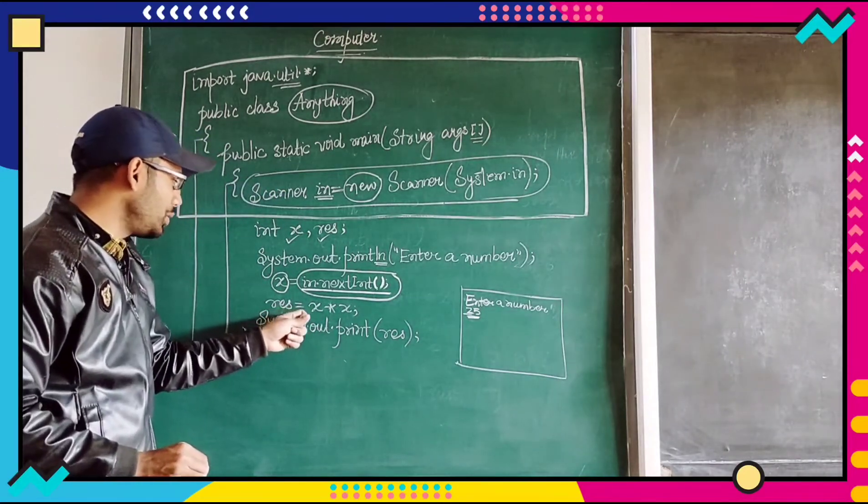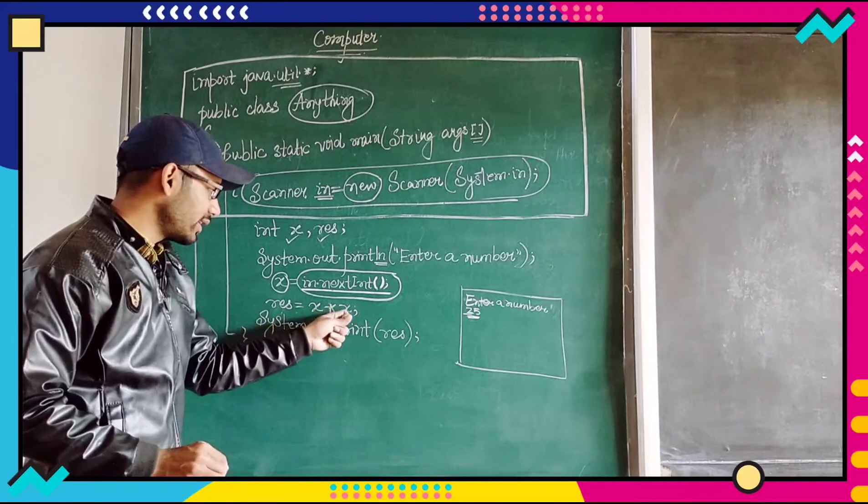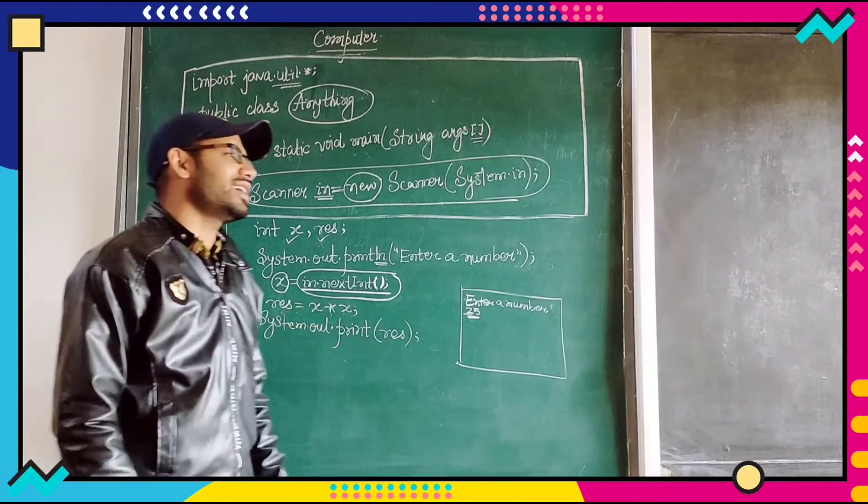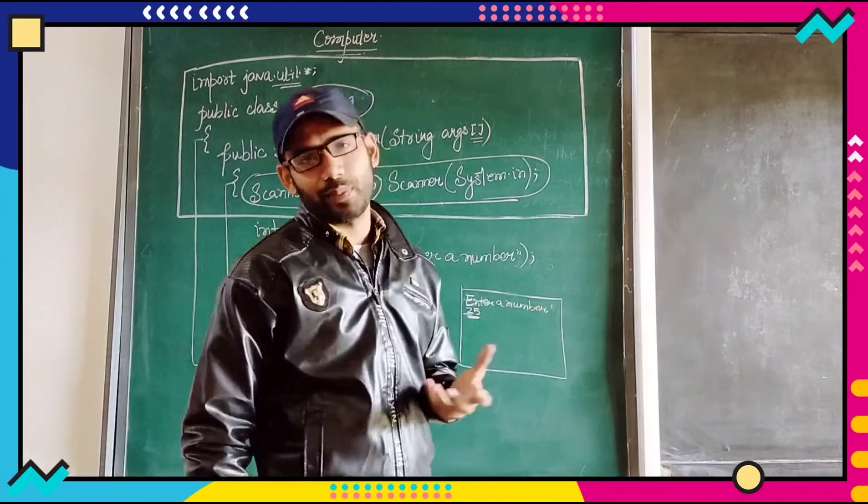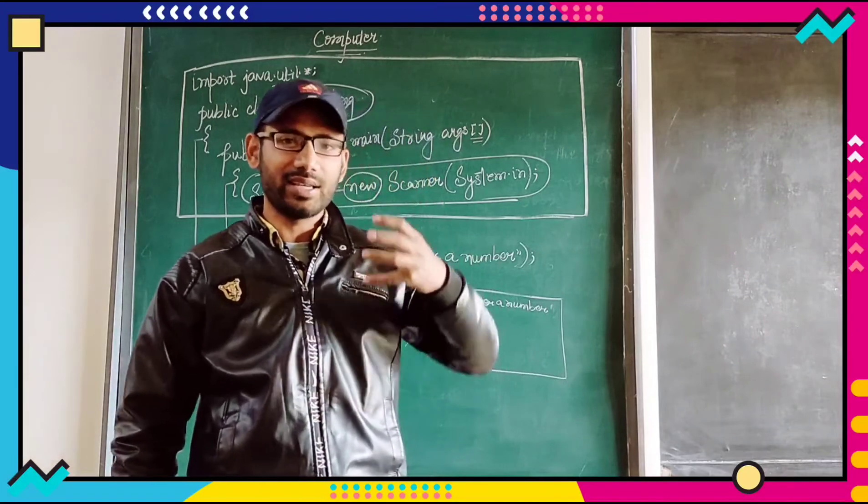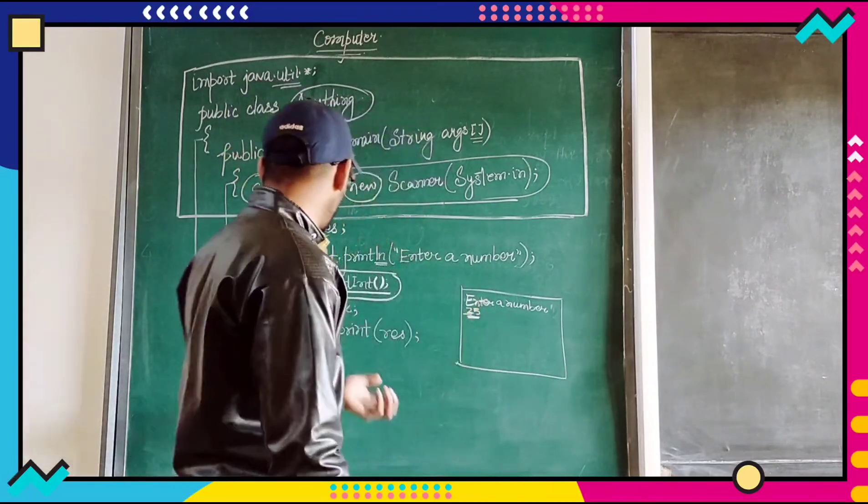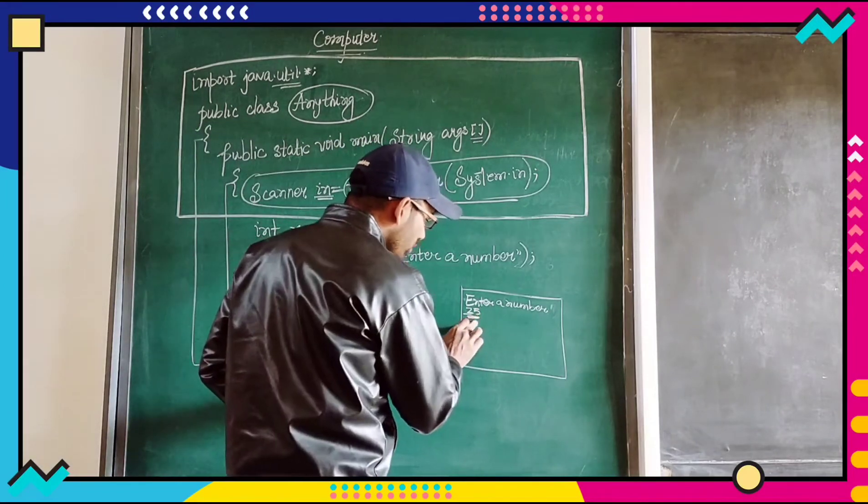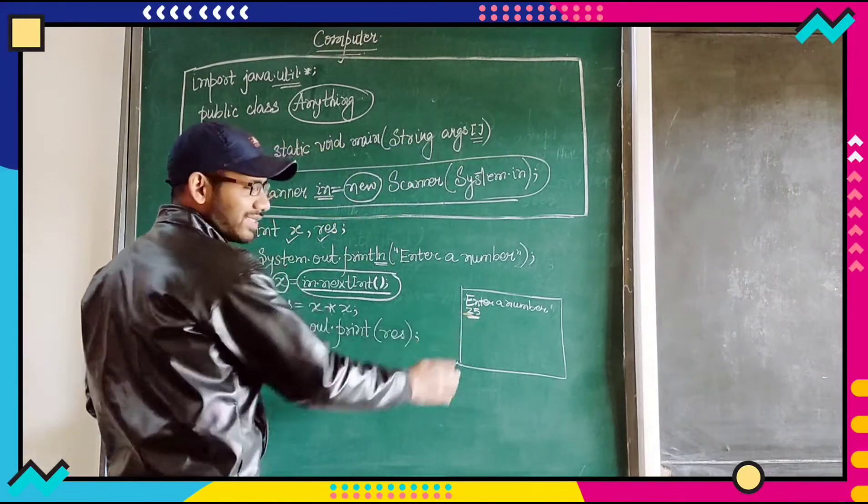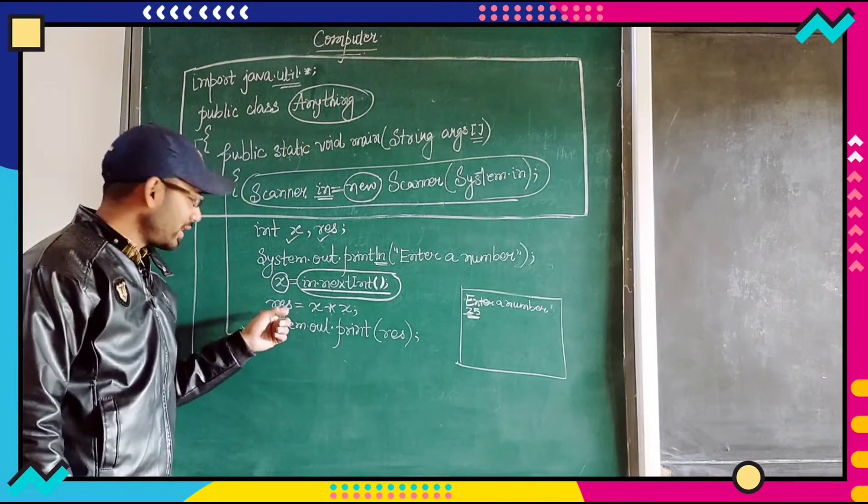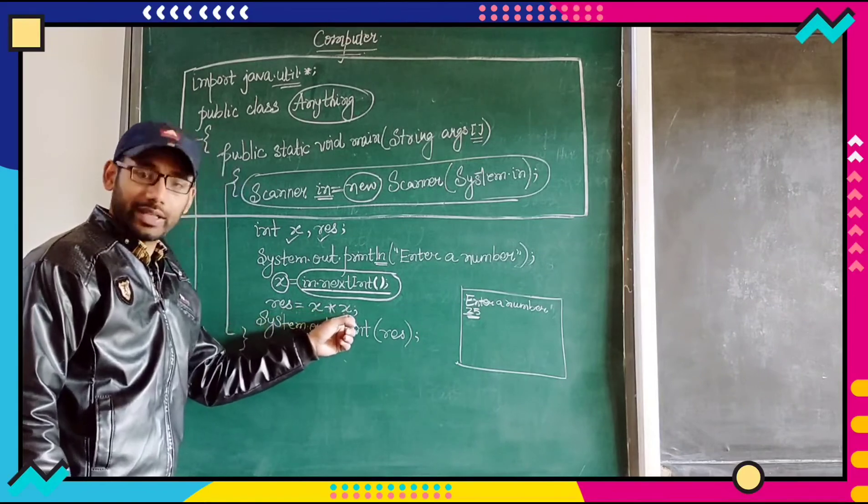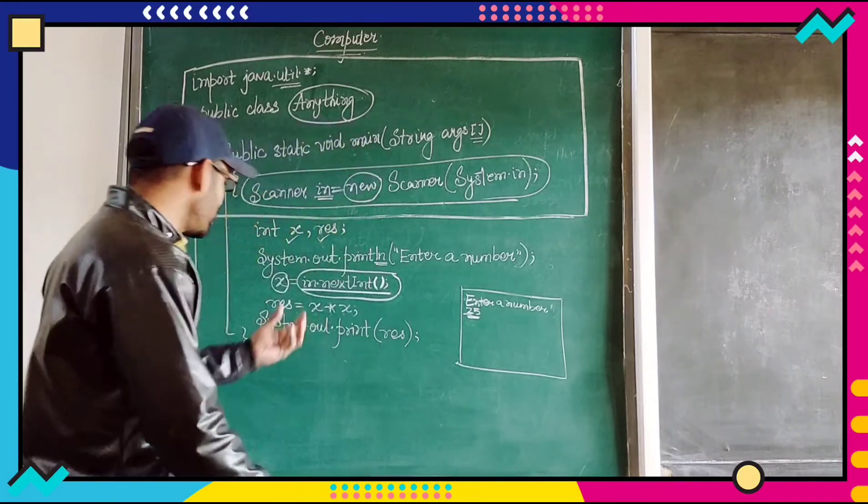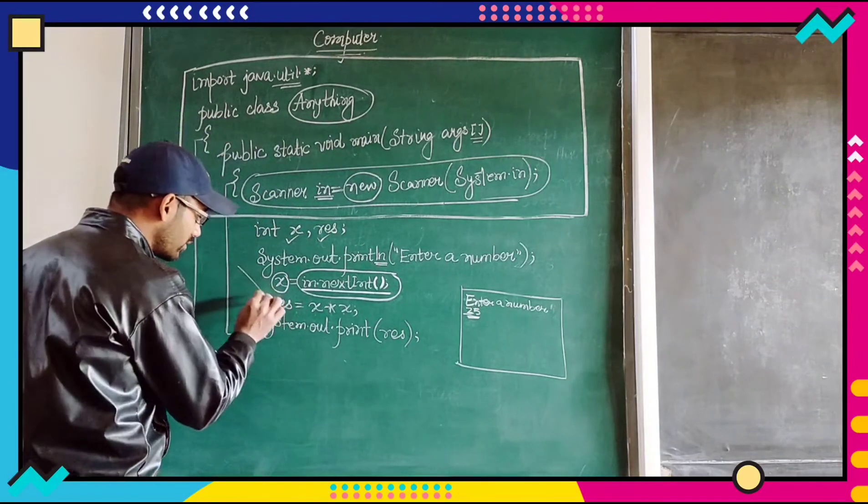After that res is equal to x asterisk x. What does this asterisk sign tells you? This asterisk sign is responsible for multiplication. In computer terminology, multiplication sign is not present. Instead we use this asterisk sign. Since user gave 25 as an input, result will be how much? Result is equal to 25 into 25. That means square of 25, 625. 625 will be stored inside res.